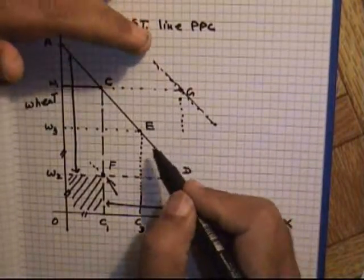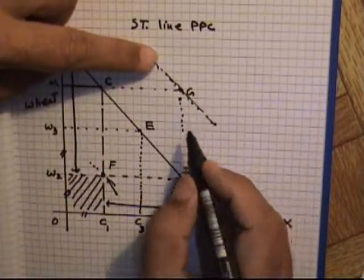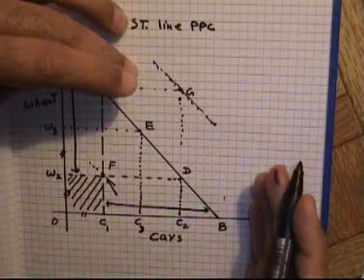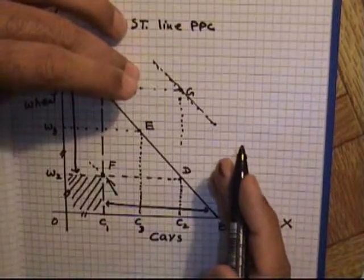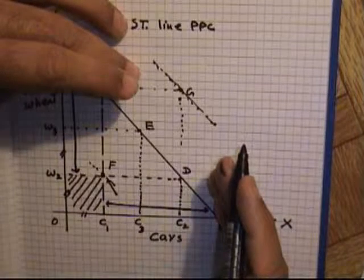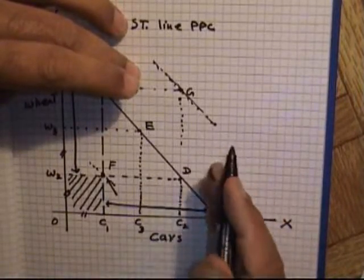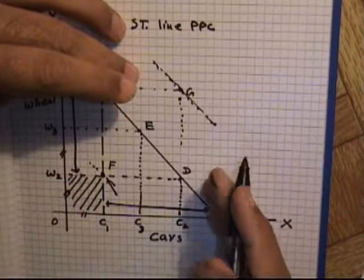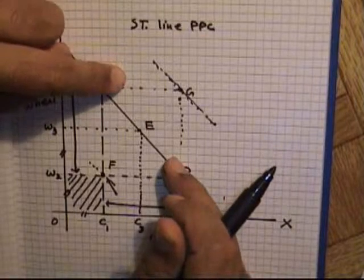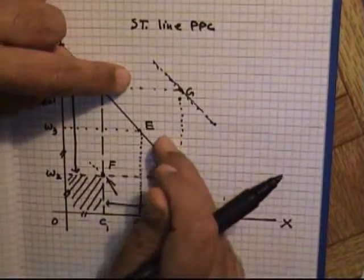How can a country increase production capacity from a point like E to point G? This is possible if the country adopts long-term supply-side policies — policies which help in the development of infrastructure like education, telecommunications, road systems, and banking systems.